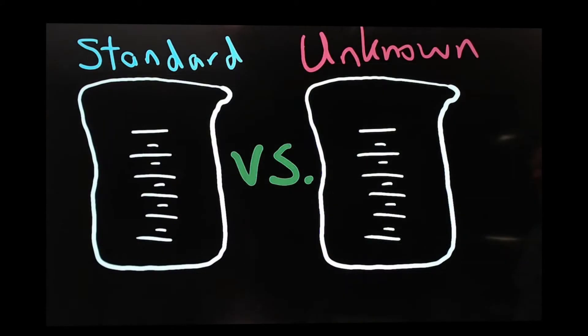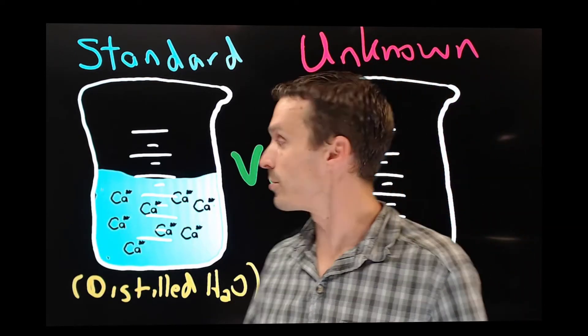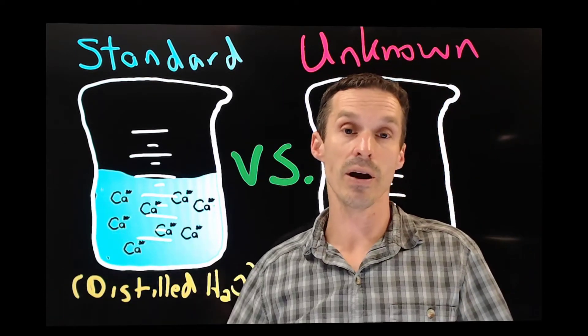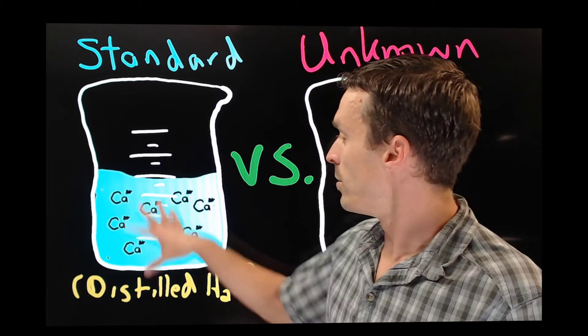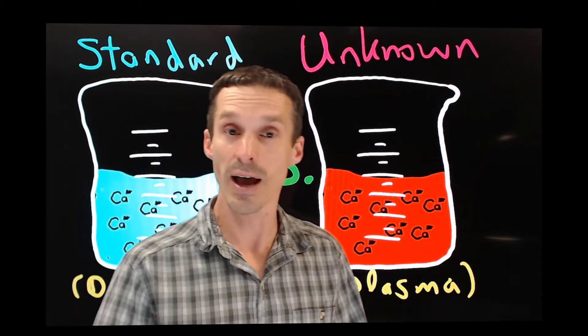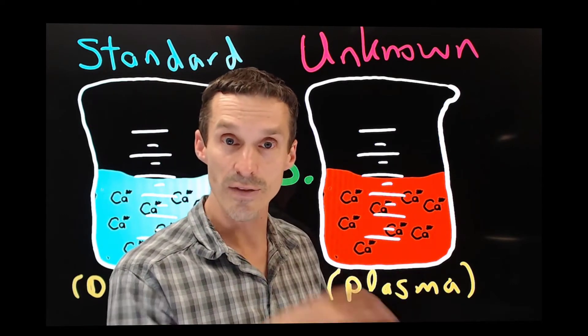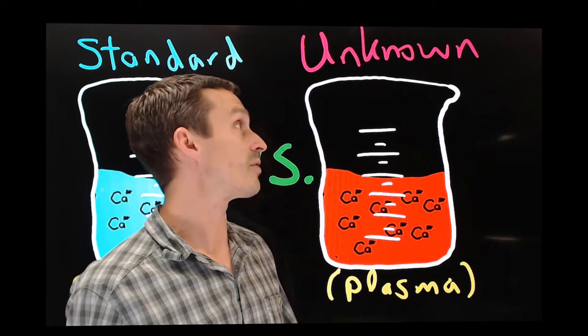So let's see how we can actually work with these samples, trying to get the best measurement possible. Of course, if we're going to figure out an unknown, we have to compare it to a standard. And more than likely, our standard solution will be made from distilled water, right? We want to keep it as clean as possible. You could make up a set concentration. Whereas on the other side, our plasma sample, it'll have calcium in it, but it'll have a whole lot of other stuff. And that other stuff is what's at stake here.